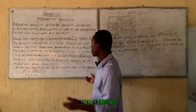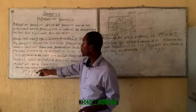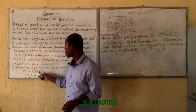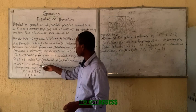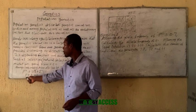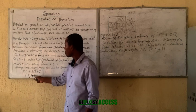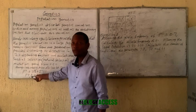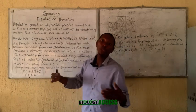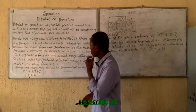Let's look at the Hardy-Weinberg principle expressed as an equation. In this equation, p represents the dominant allele frequency and q represents the recessive allele frequency. If you add both of them together you always get one, or 100% if you want to express it as a percentage.